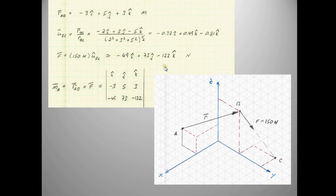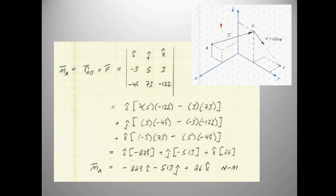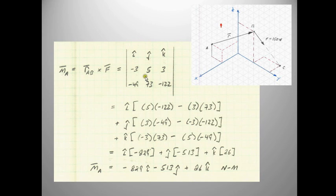Now we evaluate the cross product. The moment about point A equals R cross F, so it's (−3, 5, 3) crossed with (−49, 73, −122). For the I component: 5 times −122 minus 3 times 73. For the J component: −(−3 times −122 minus 3 times −49). You propagate the signs through carefully and compute each component.